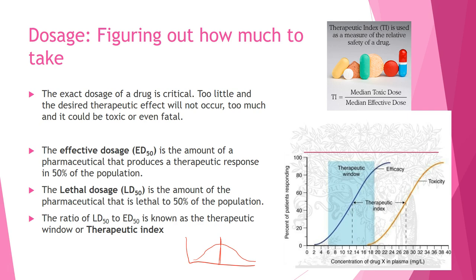We look at the effective dose in 50% of the population. Below this dosage it's not going to be effective for most people. The lethal dose in 50% of the population — the LD50 — is determined through animal models and is not done in humans. If we were to give it to 5,000 subjects, we would expect 2,500 to die, which is why this is not done in humans.